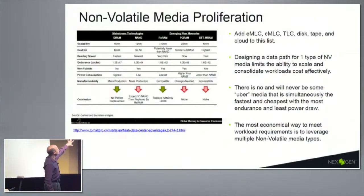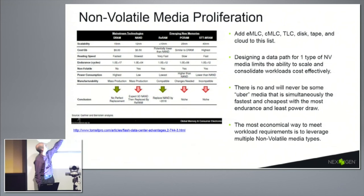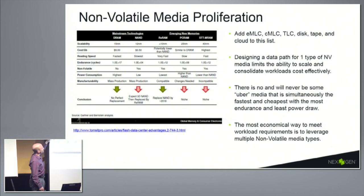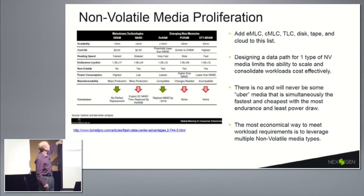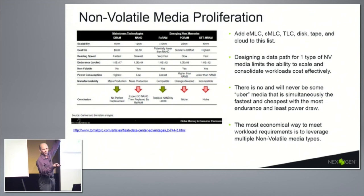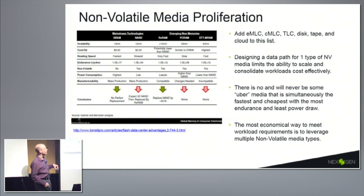One of the things we were talking about is the different technologies available. This is a quick snapshot. You've got DRAM, NAND, rewrite, resistive RAM, PC RAM, and STT. All of these have different functionalities, different costs, different performance, and different features that make them work in an array in different areas and cycles. Speed is an obvious differentiator — some things are faster, some slower — and that determines where they fit in an array for the workload that best suits them.